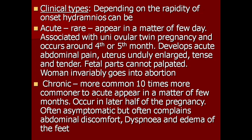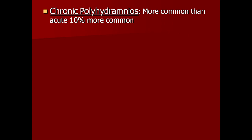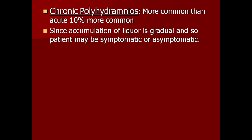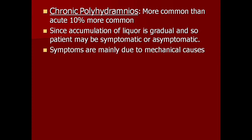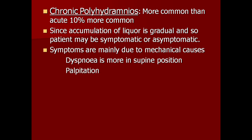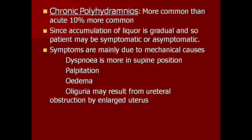Chronic polyhydramnios appears over a few months, occurring in the later half of pregnancy. It is often asymptomatic, but patients may complain of abdominal discomfort, dyspnea, and edema of the feet. Since accumulation of liquor is gradual, patients may be asymptomatic or symptomatic. Symptoms are mainly due to mechanical causes: dyspnea is more in the supine position, palpitation, edema, and oliguria.